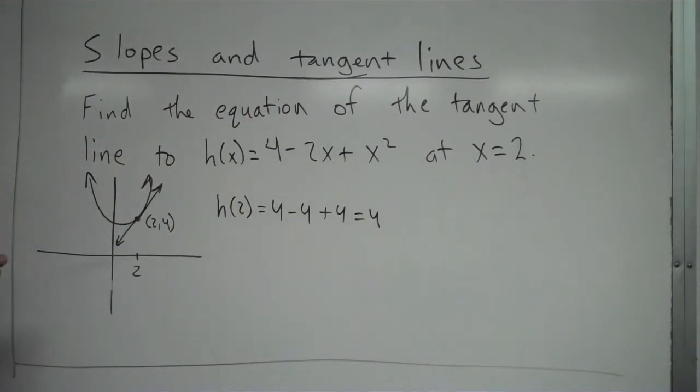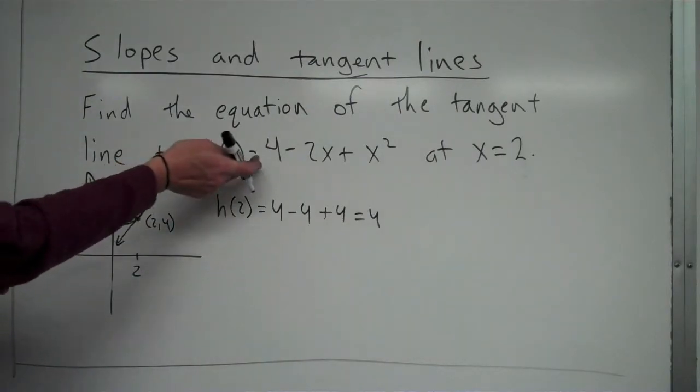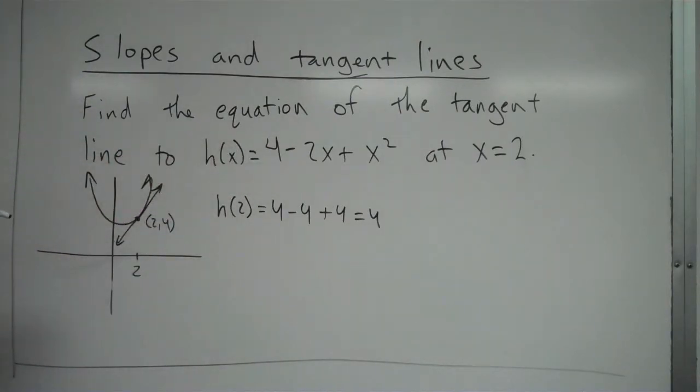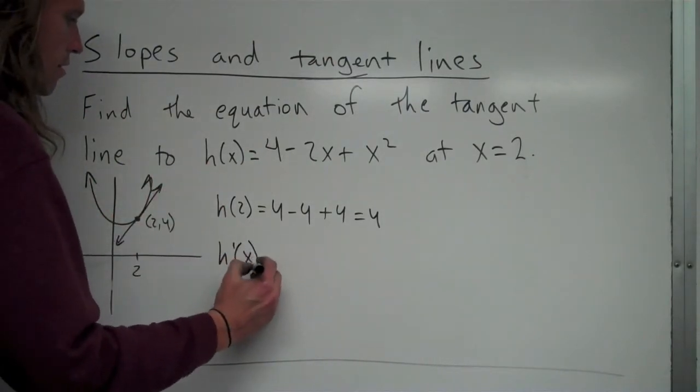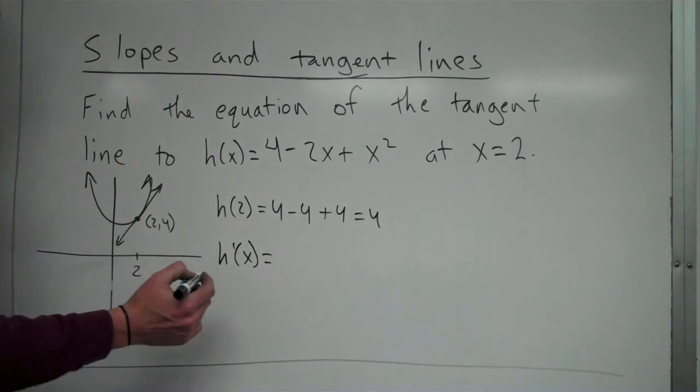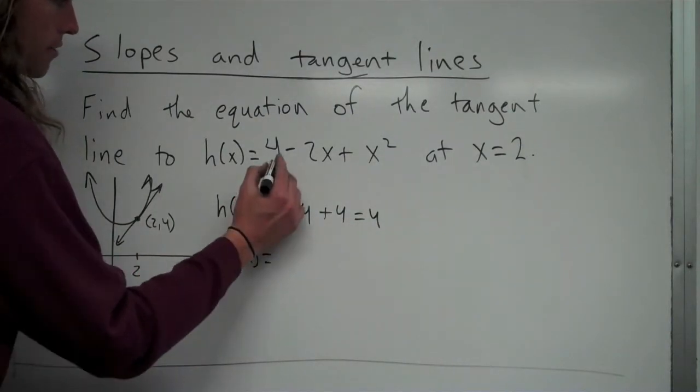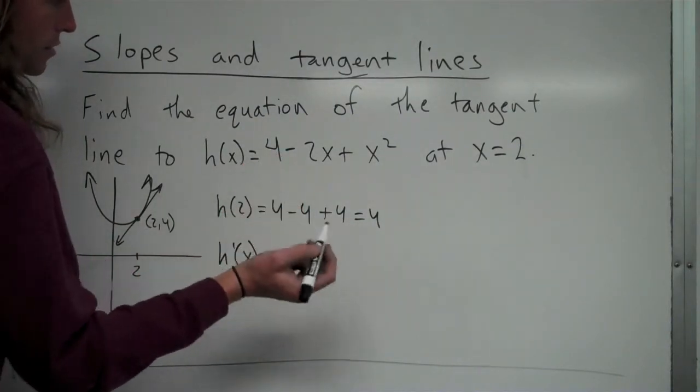And the other thing we need for a line is its slope. So again, the line has the same slope as the graph at x = 2. So what we can do is we can find out what is the slope of the graph at x = 2. The way we do that, we take the derivative. So I take the derivative of this. The derivative of 4 is just 0, it's a constant. The derivative of -2x is -2.